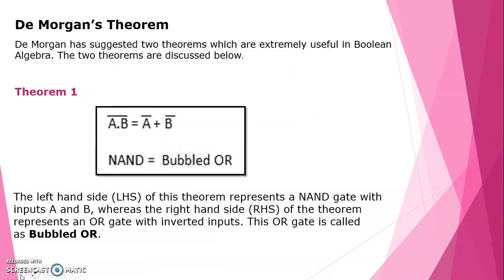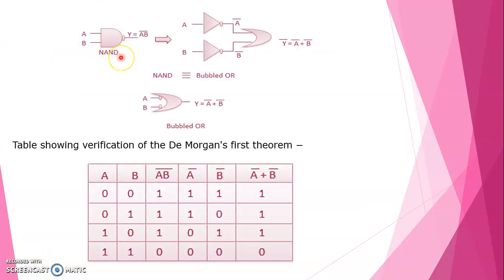Next is De Morgan's theorem. De Morgan's has two types of theorems. The first theorem states that the complement of a product equals the sum of complements: A·B bar equals A bar plus B bar. NAND equals bubbled OR. The left-hand side represents a NAND gate with inputs A and B, whereas the right-hand side represents an OR gate with inverted inputs, called the bubble OR.